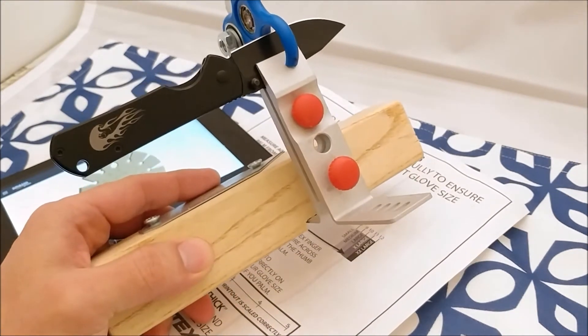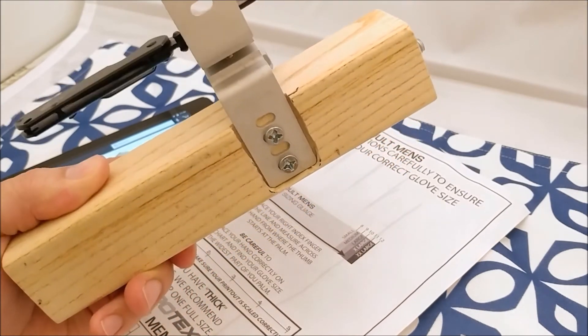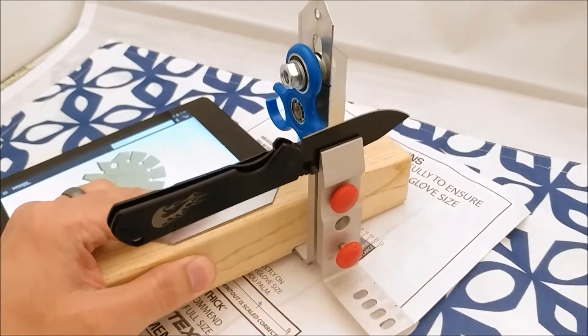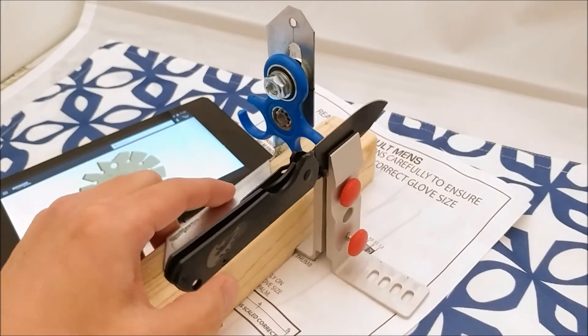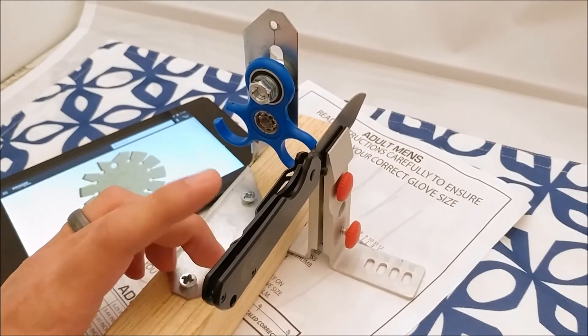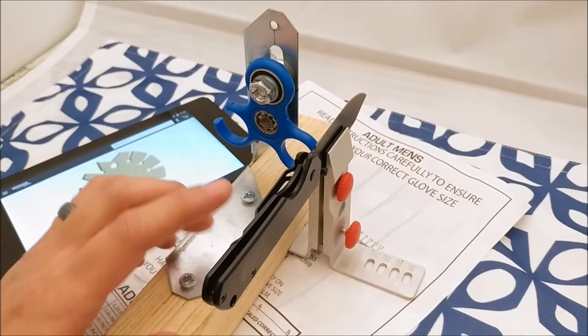I picked up the Lansky, put that on there, use a Dremel and actually cut out the bottom of that to actually have that sit flush. So that actually holds the blade that I will be testing today, which is a San Renmu, but I can put any of the blades in there.